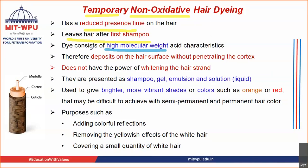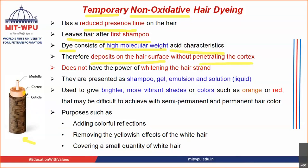The dye is having high molecular weight and it is acidic in nature. Because of this, these dye molecules do not penetrate through the cuticle — they do not pass through the cuticle and they do not reach the cortex. As they are remaining on the cuticle — that is on the surface of the hair — there is no binding taking place between the dye molecule and the cuticle or the hair. Hence, after the first shampoo, this color gets removed. So it consists of high molecular weight dye and it is acidic in nature — they deposit on the hair surface and do not penetrate the cortex.